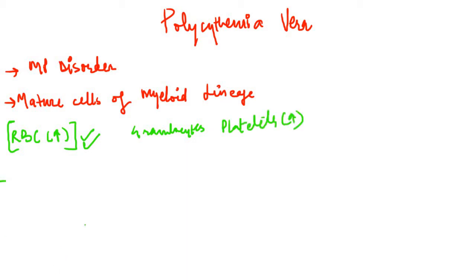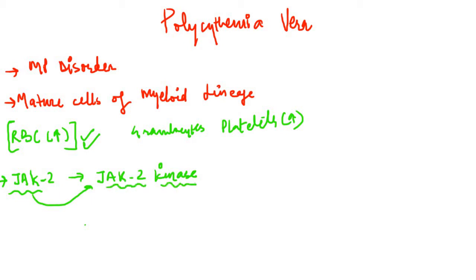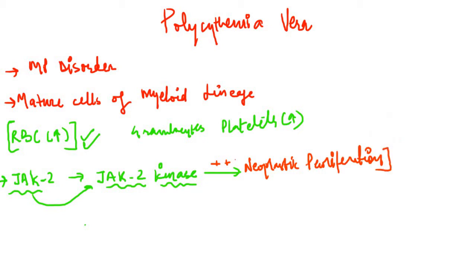The pathogenesis of polycythemia vera is caused by a mutation in a gene that encodes for tyrosine kinase, called the JAK2 gene. The tyrosine kinase associated with this gene is called JAK2 kinase. As a result of the mutation, there is increased synthesis of JAK2 kinase, which leads to increased signals to the cells and neoplastic proliferation — especially of RBCs, and to some extent of granulocytes and platelets.